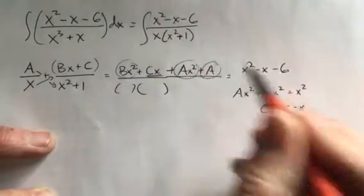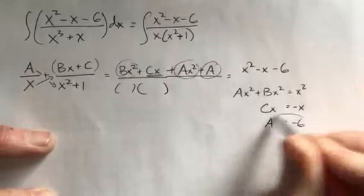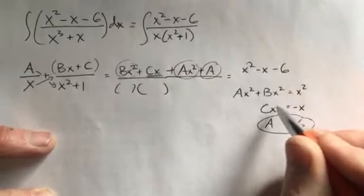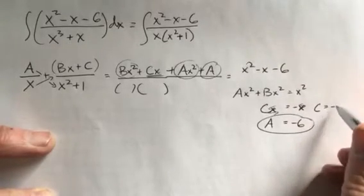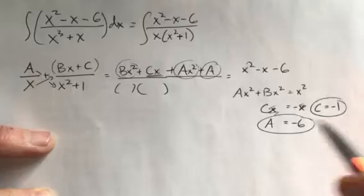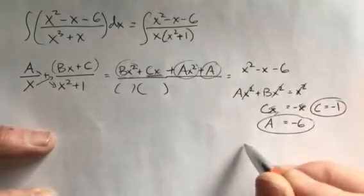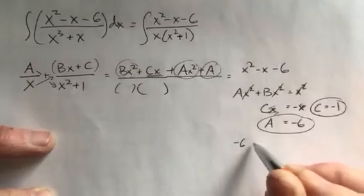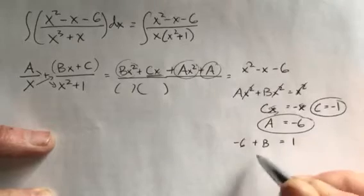When I plug in -6 for A, then A + B = 1. Add 6 to both sides, so B = 7. So I know that this integral will become the integral of -6/x plus (7x - 1)/(x² + 1).